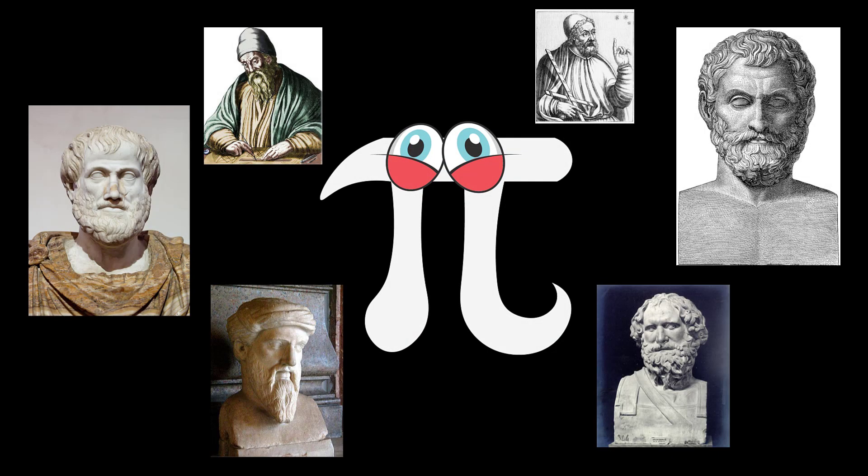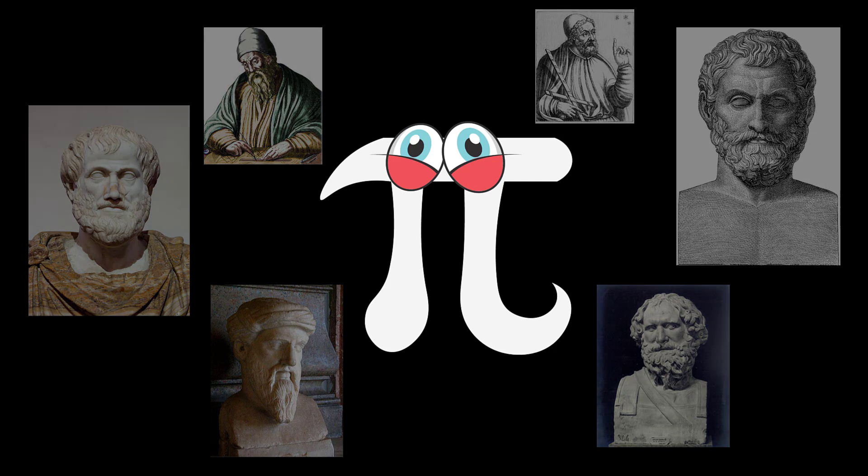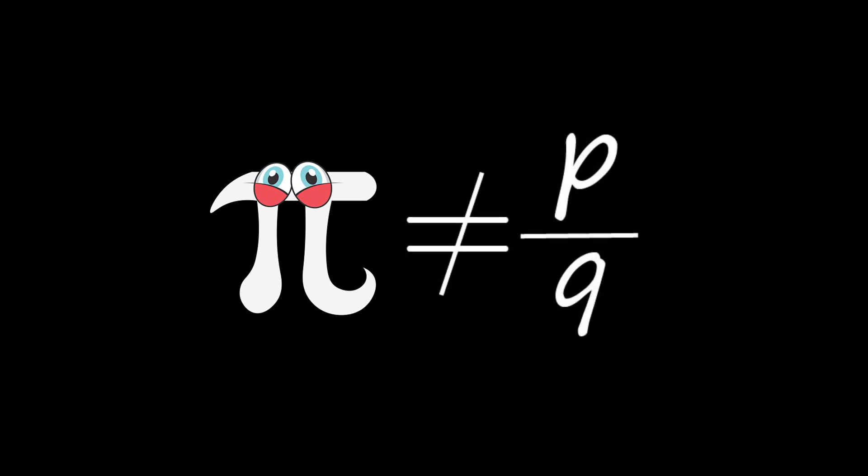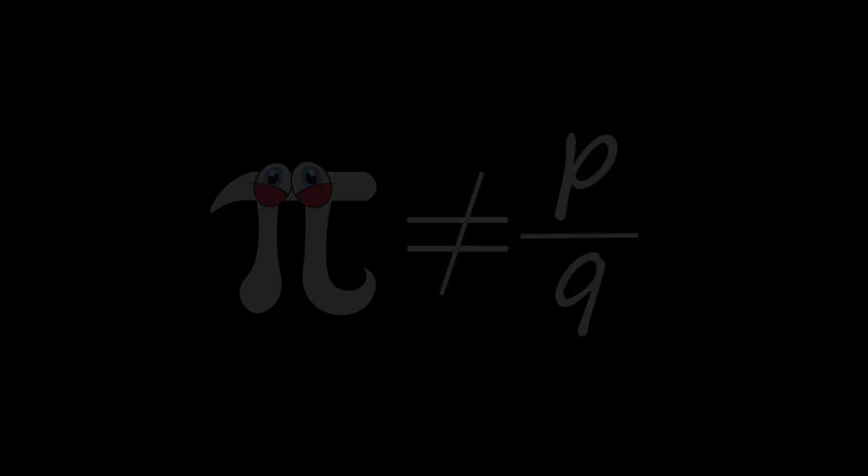The Greeks were not able to obtain an exact rational value for Pi. The reason is simple that Pi is not a rational fraction. It is a more complicated number. Though some Greek mathematicians might have suspected this, none proved it.